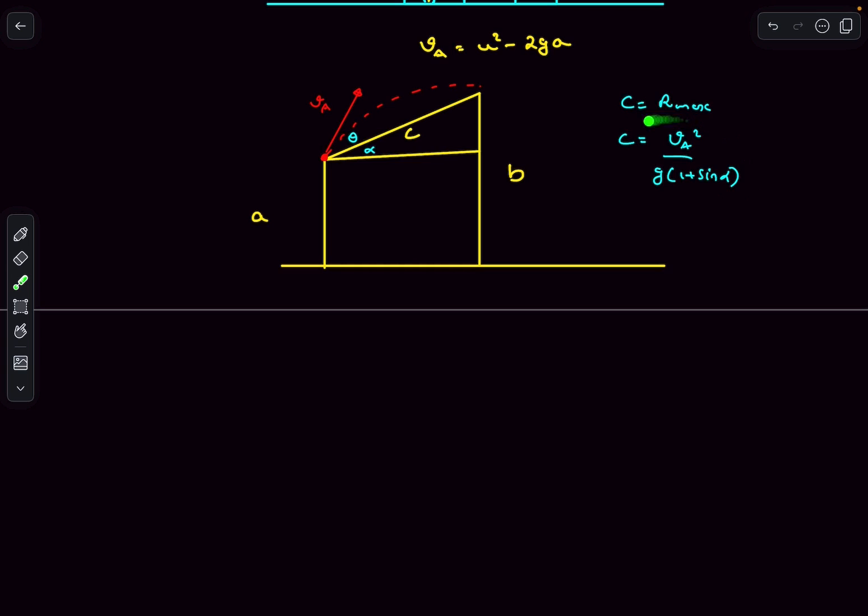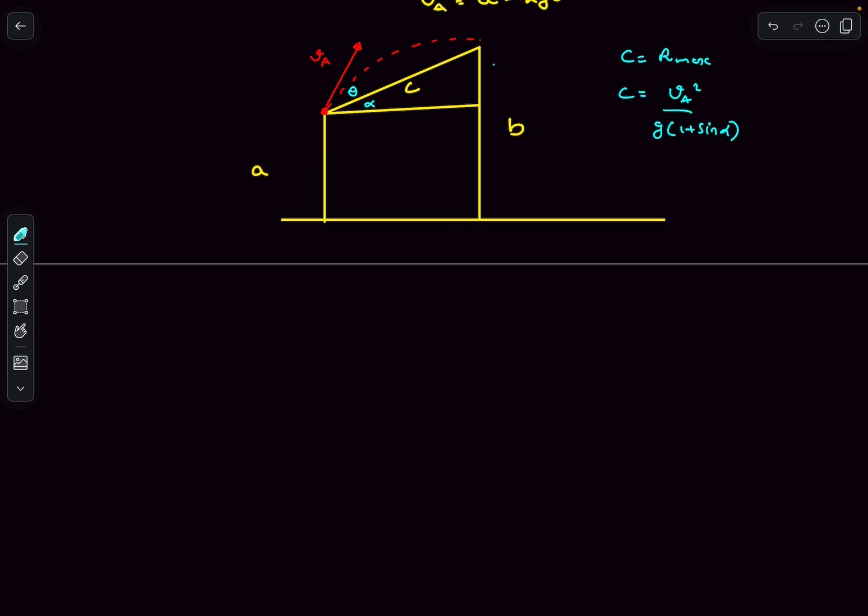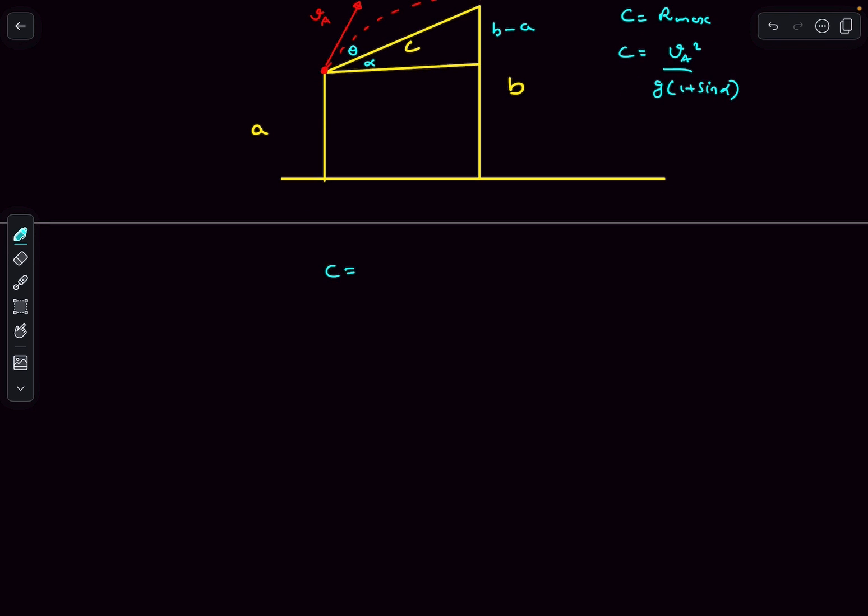Now from this triangle, this side length is b minus a, so sine alpha is going to be (b minus a) divided by c. From here we get c equals va squared, which is (u squared minus 2ga), divided by g times (1 plus sine alpha), which is (b minus a) divided by c.